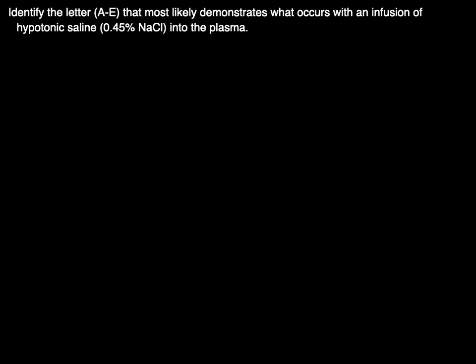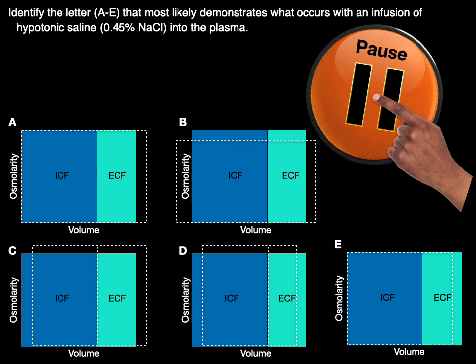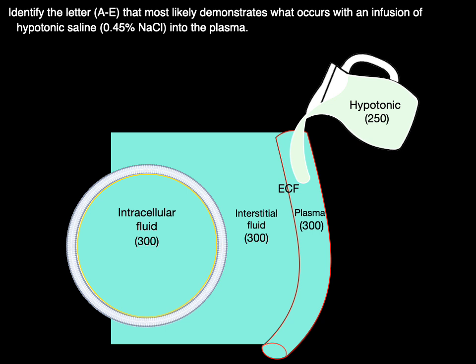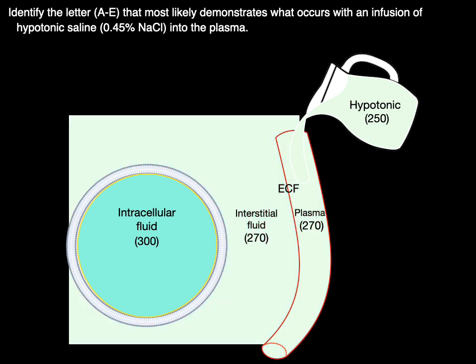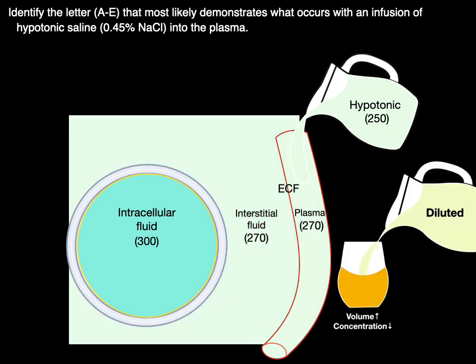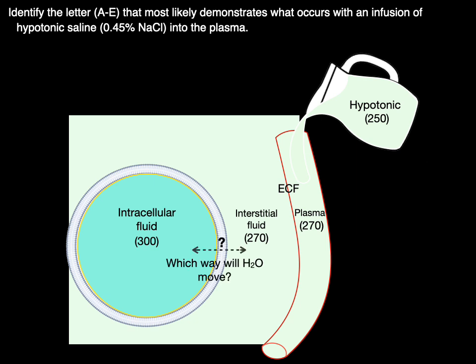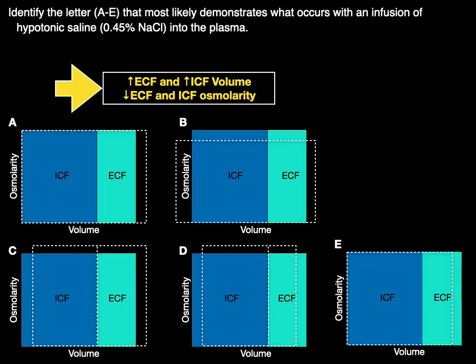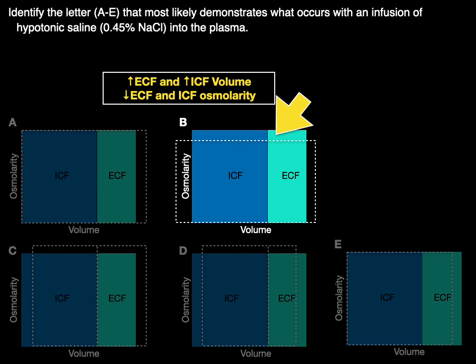Next question: identify the letter that most likely demonstrates what occurs with an infusion of hypotonic saline into the plasma. We're going to add a hypotonic solution to the plasma, which dilutes the plasma and interstitial fluid but increases the volume of both. But now we have a difference in osmolarity between intra- and extracellular fluid. Water always moves towards the saltier compartment until the osmolarities equalize. Which letter shows this change? The letter B shows this change.